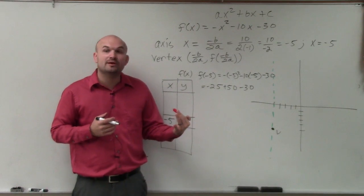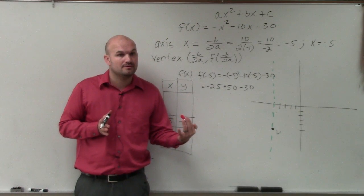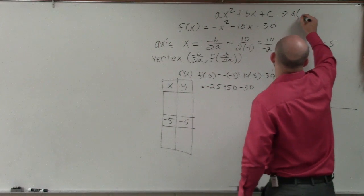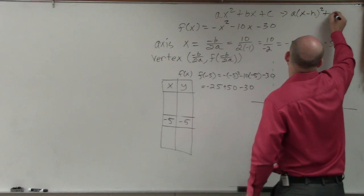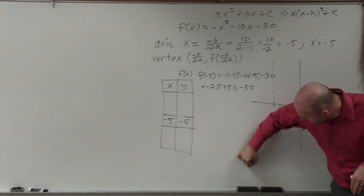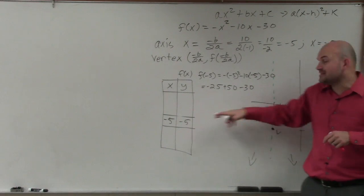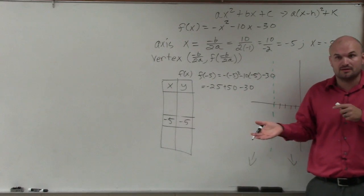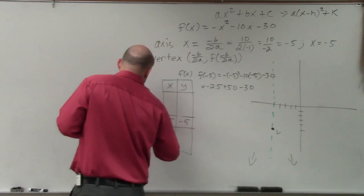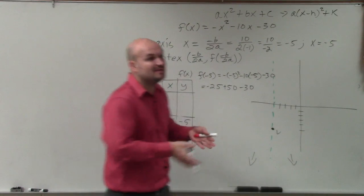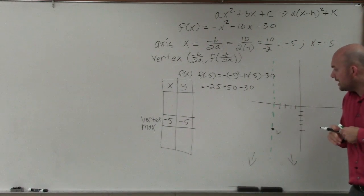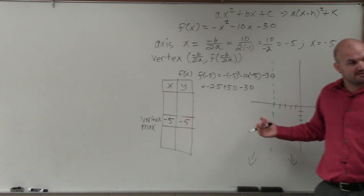Also, we need to determine, does the graph open up or does the graph open down? Down, because a is negative. The value of a tells you the same thing. It's negative, so we know the graph is going to open down. So therefore, if the graph opens down, is my vertex going to be the highest point or the lowest point? Highest. So therefore, we can call this vertex the maximum point. When they're asking you if it's a maximum or minimum, you just got to determine what the vertex is and if the graph opens up or opens down. The next thing is we need to determine the rest of the points to make the graph.